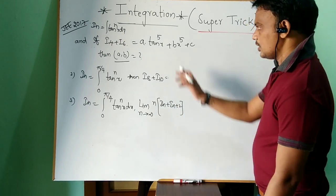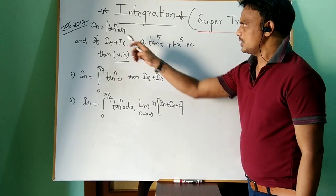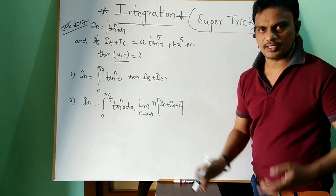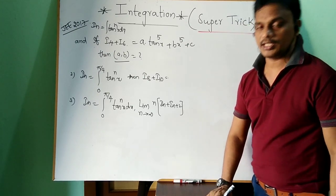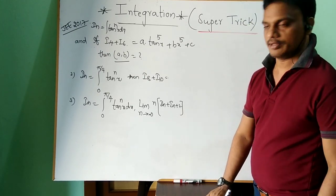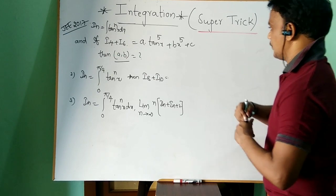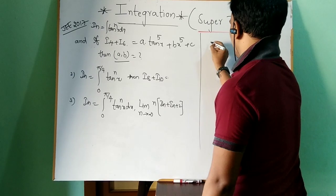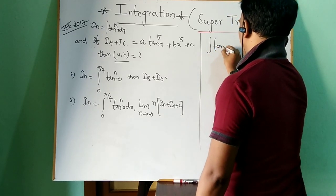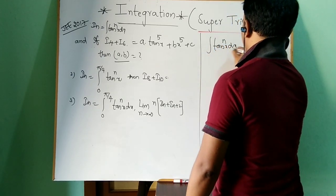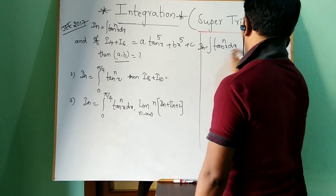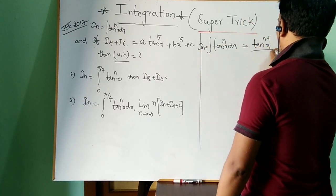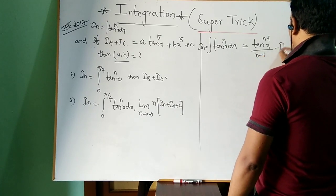Some of you may follow the method of integrating both sides and comparing portions — that is also a valid easy method. I am going to explain a shortcut where within 10 seconds you will get the answer. You know the reduction formula: i_n = integral of tan^n(x) dx = tan^{n-1}(x) / (n-1) minus i_{n-2}.